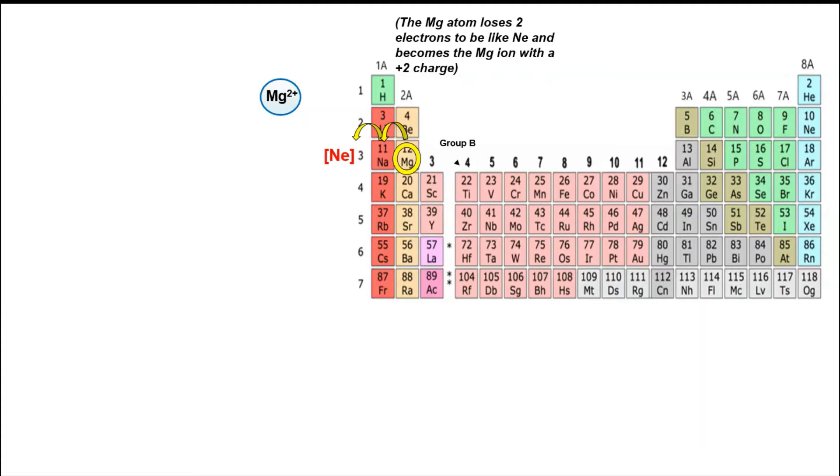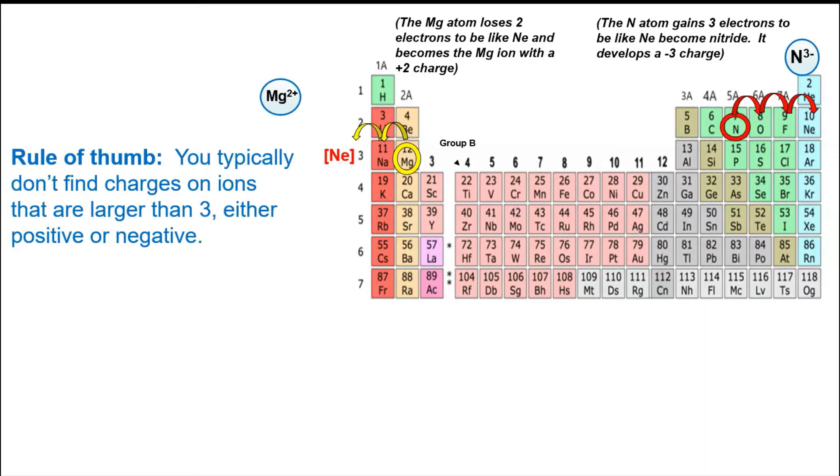Once you look at the number of electrons that are lost, then you can figure out the charge without any problem. On the end of the nonmetals there's nitrogen, which will become nitride by gaining three electrons and forming the nitride with a negative three charge. Once you figure out the number of electrons gained, then you've got the charge down without any trouble.